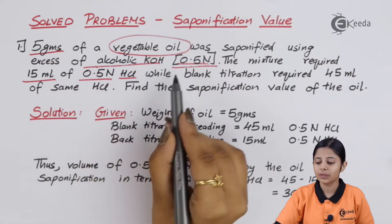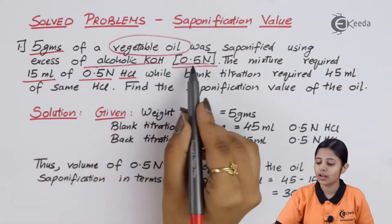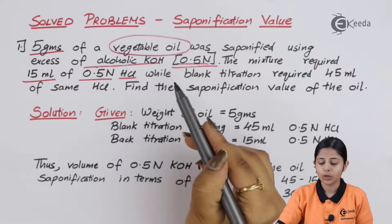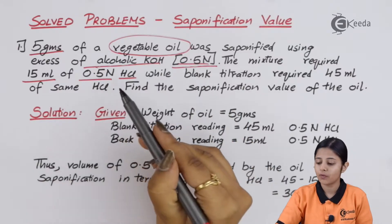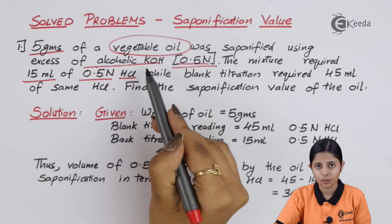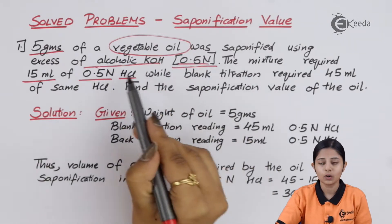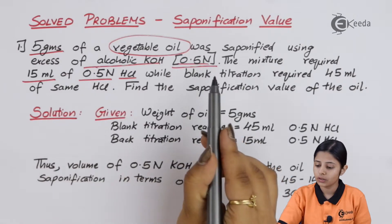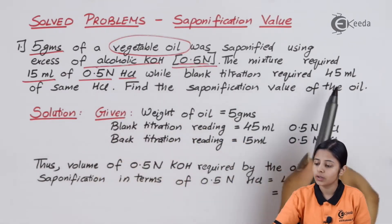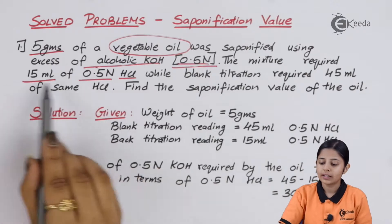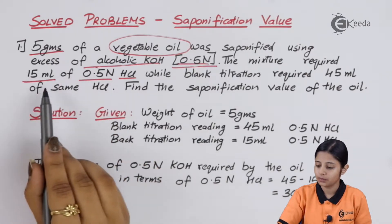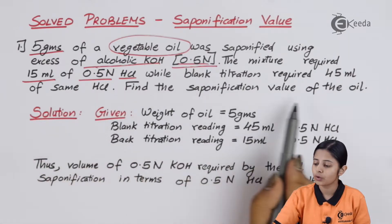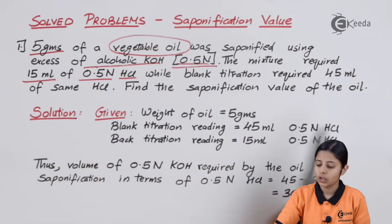In this problem there will not be any issue since both normalities are the same — KOH has a normality of 0.5 and HCl also has a normality of 0.5. The only difference is the volumes: alcoholic KOH blank titration value is 45 ml and HCl back titration is 15 ml. Find the saponification value of the oil.